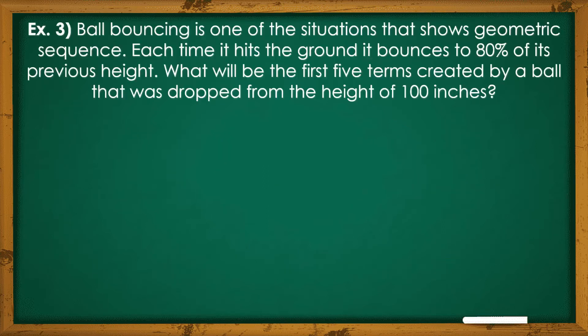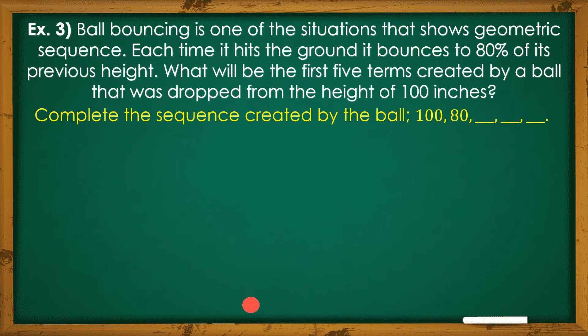Now, let's try a problem. Ball bouncing is one of the situations that shows geometric sequence. Each time it hits the ground, it bounces to 80% of its previous height. What will be the first 5 terms created by a ball that was dropped from the height of 100 inches? So, ito ang gagawin natin. We need to complete the sequence created by the ball. Started with 100 inches, then followed by 80 inches, and so on and so forth. Now, ano-ano yung mga nawawalang terms in this geometric sequence.